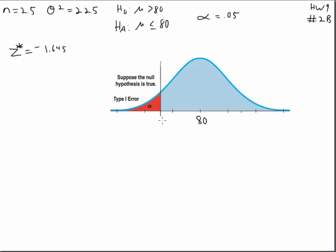So we want to find this x bar star. Well, if we take our critical z value, negative 1.645, that's going to equal that cutoff value minus the hypothesized mean over the standard error of x bar, which will be 225 over 25, and then take the square root of that.